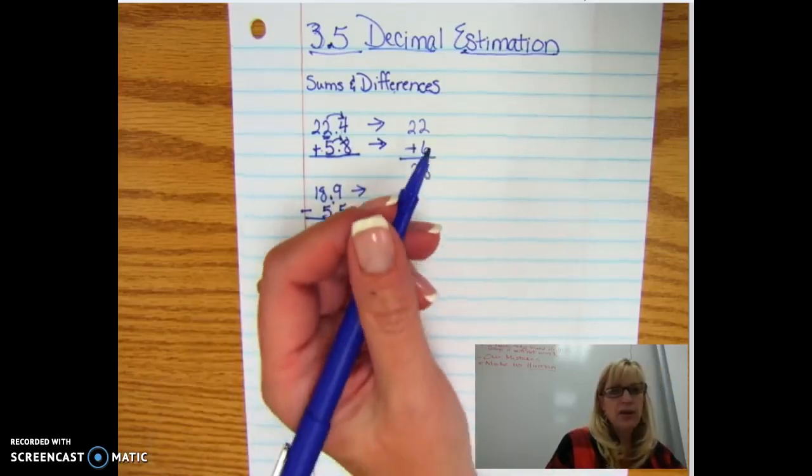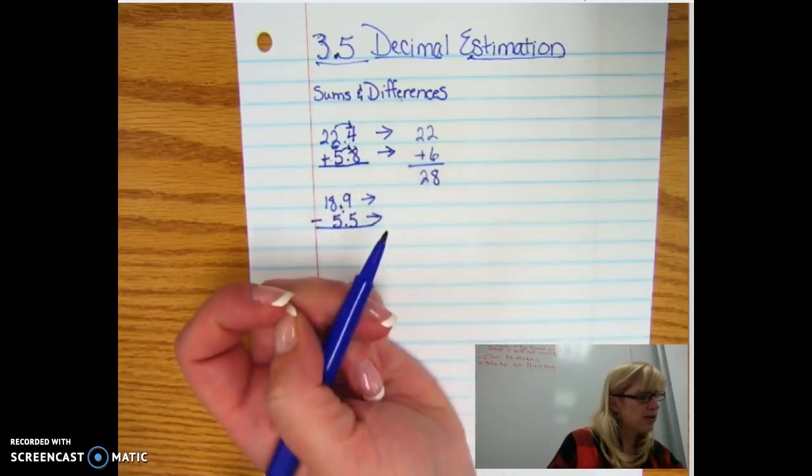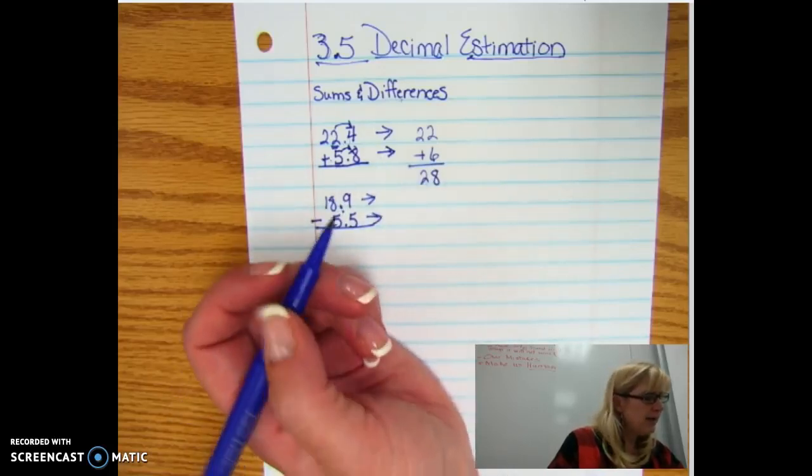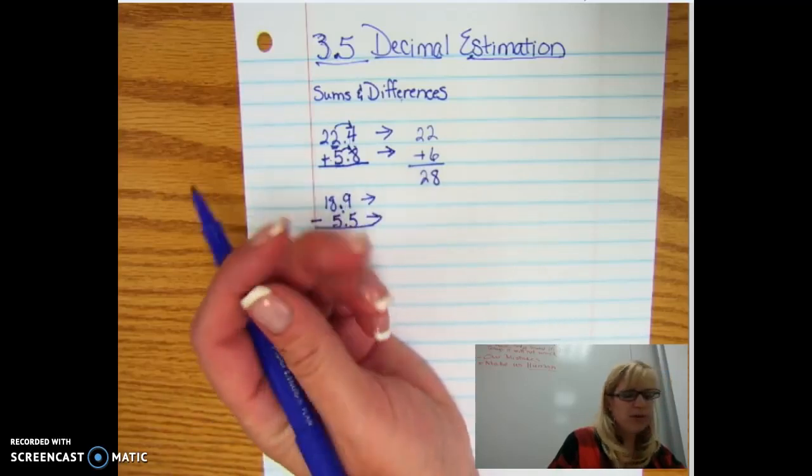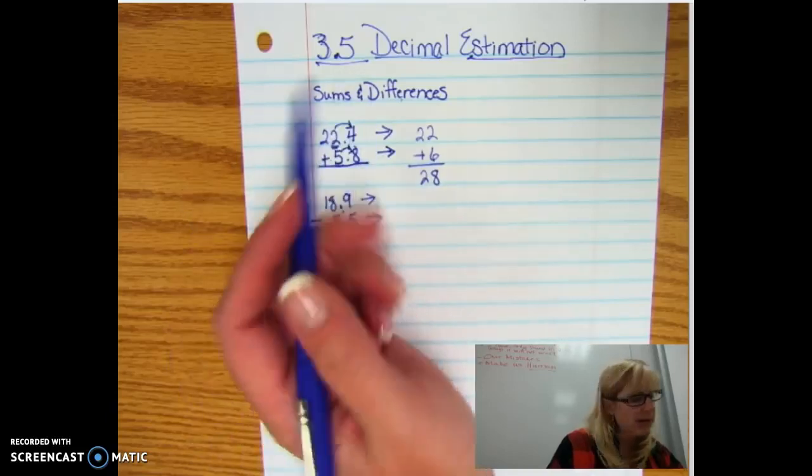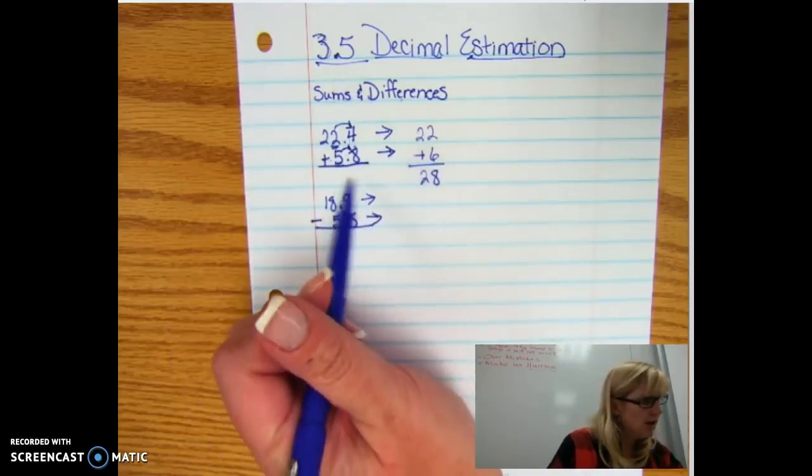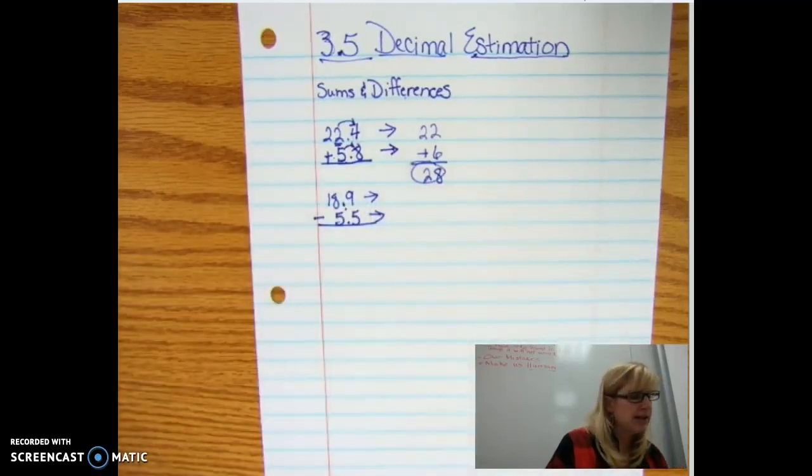This really helps you when you are taking a test or a quiz because it'll get you close. If you end up getting 2,712, say, you know that you're very off, that you've got the decimal in the wrong place, because if you do your estimation, you should get a number that's pretty close to 28 when you get your exact answer.